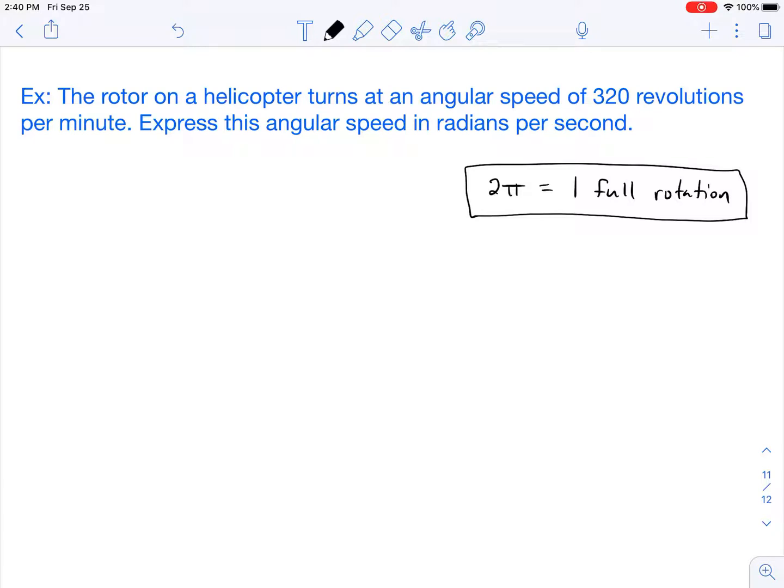Whenever I do a unit conversion problem I like to use t-charts and we always start with what we're given. So in this case we're given 320 revolutions per minute, so 320 revolutions per one minute, and I'm going to start by converting minutes to seconds.